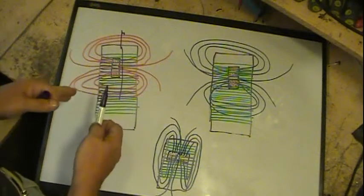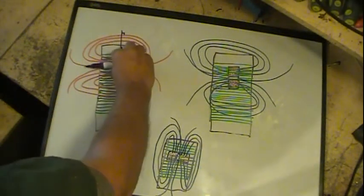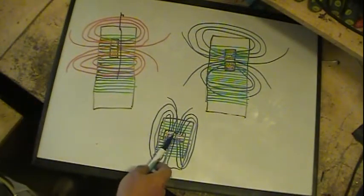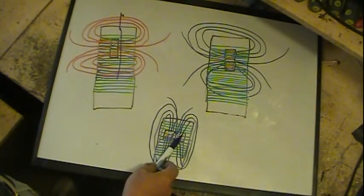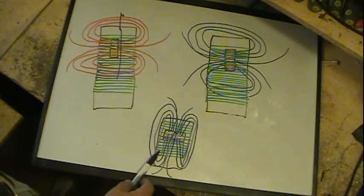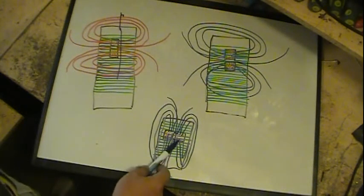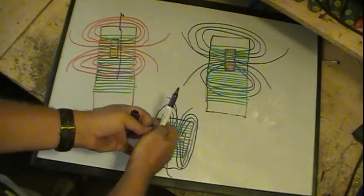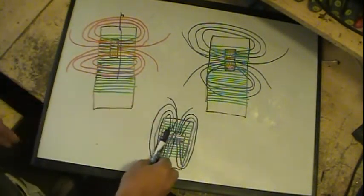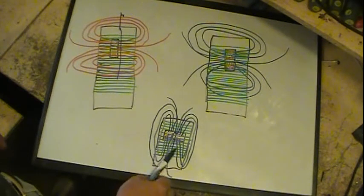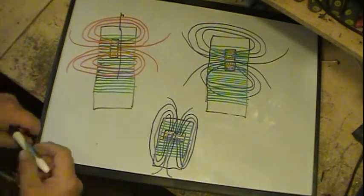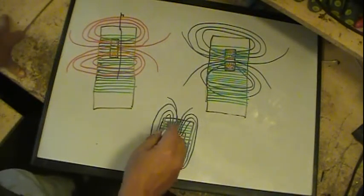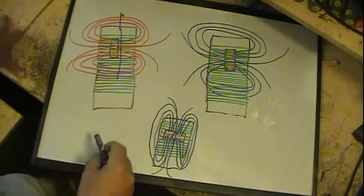You'll get some flux lines that will be cutting across at 30 degrees and 20 degrees, and there'll be enough of them to get an induced voltage. But it's going to be greatly reduced as opposed to if the coil's this way.